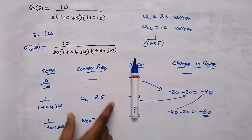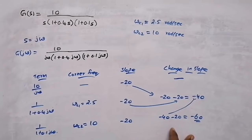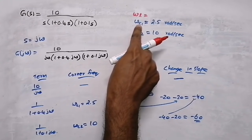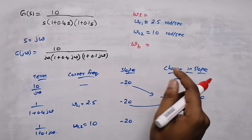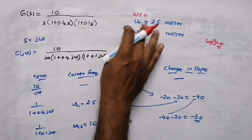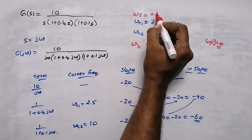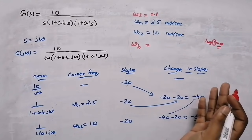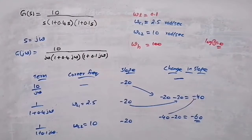The corner frequencies are in ascending order — no problem. Now select two frequencies: ω_lower and ω_higher. ω_lower must be less than the first corner frequency (2.5); do not select 1 since log(1) = 0. I take ω_lower = 0.1. For ω_higher, it must be greater than ω_c2 = 10; I take ω_higher = 100.